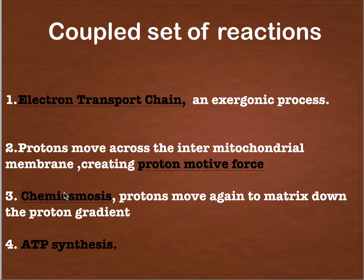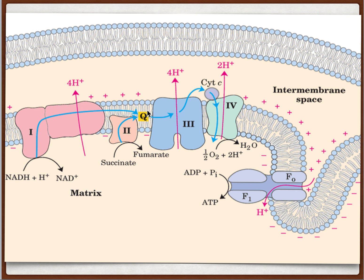The second reaction is the movement of protons across the inner mitochondrial membrane. As you can see, as the transfer of electrons takes place, simultaneously there is a movement of protons from the matrix into the intermembrane space. The energy released in the previous step is utilized here to drive these protons across the membrane. With this movement, a proton gradient is built — higher concentration of protons in the intermembrane space and lower concentration in the matrix — as well as a difference in electrical potential, with more positive charge in the intermembrane space and the matrix side being negative. Together, the proton gradient and the electrical potential are called the proton motive force.